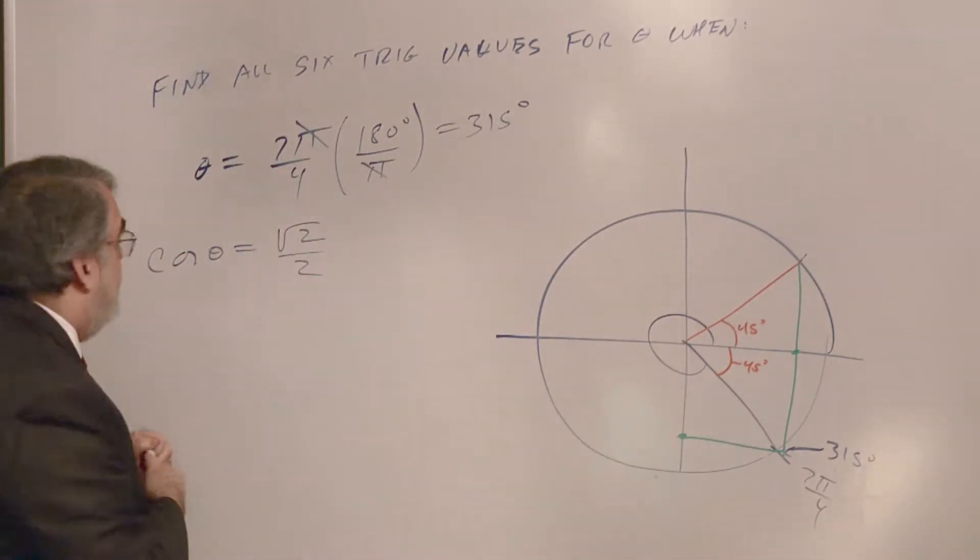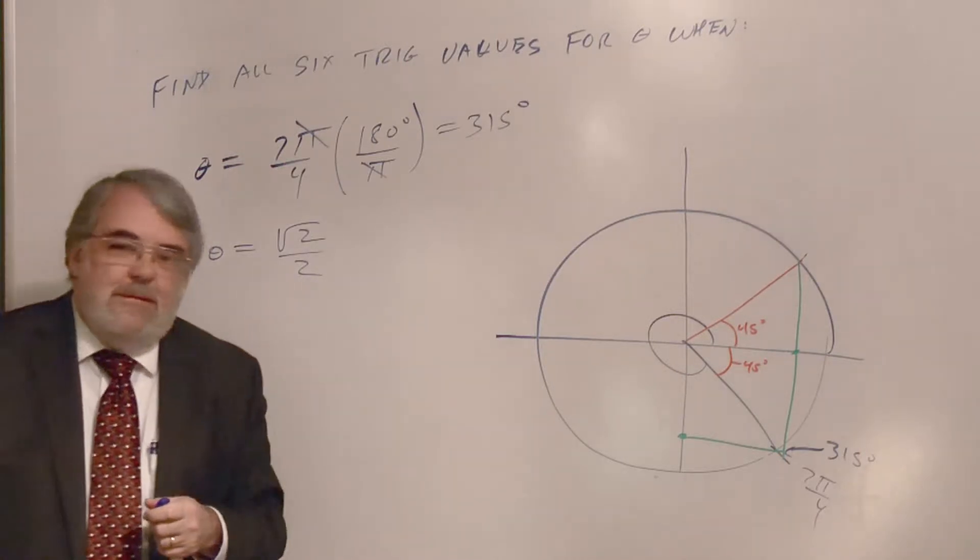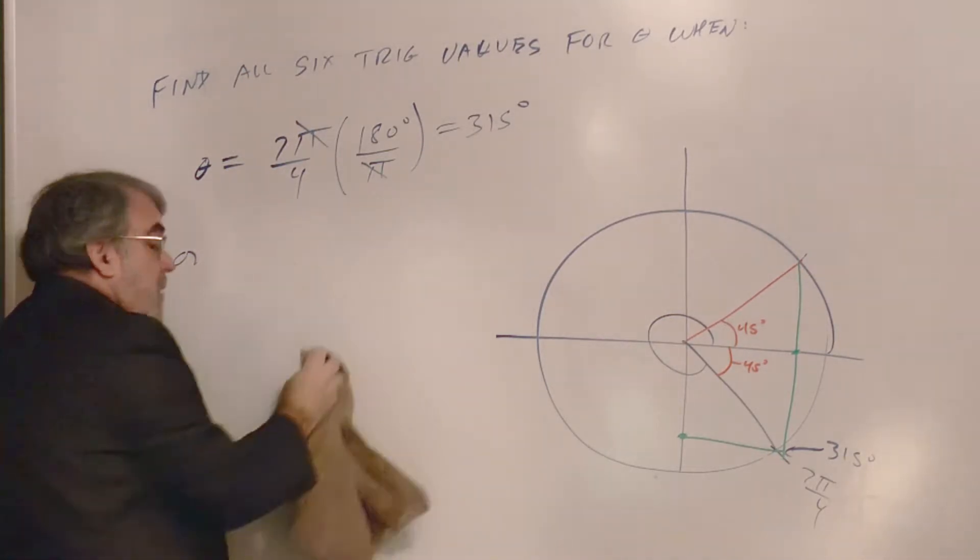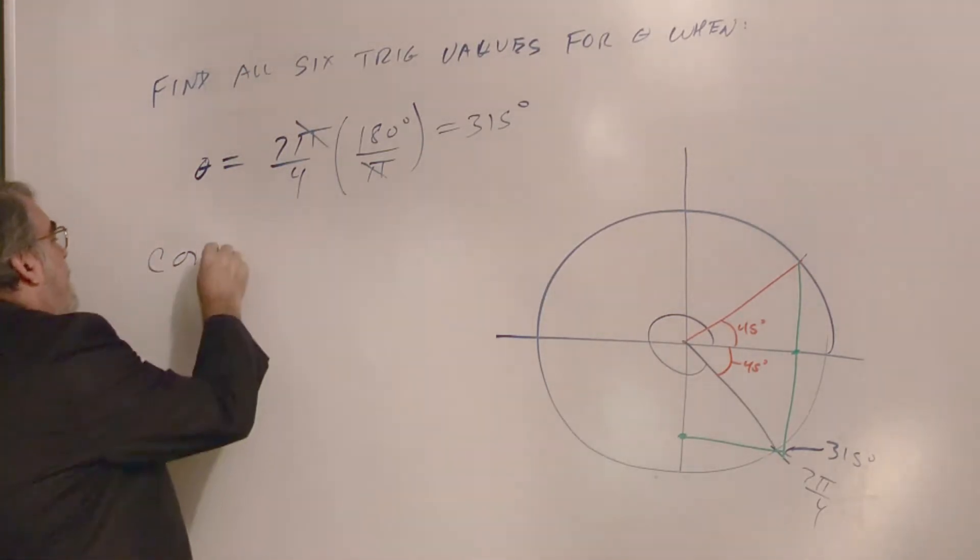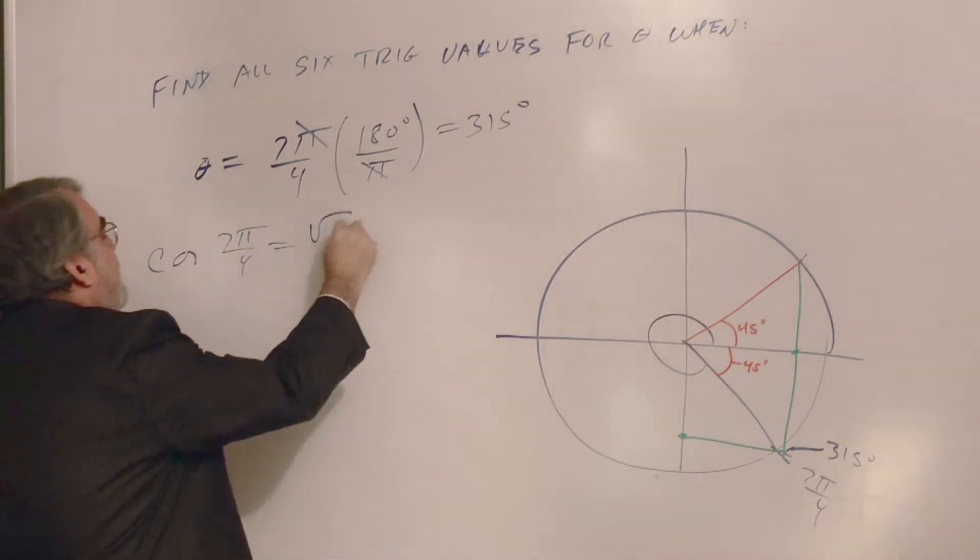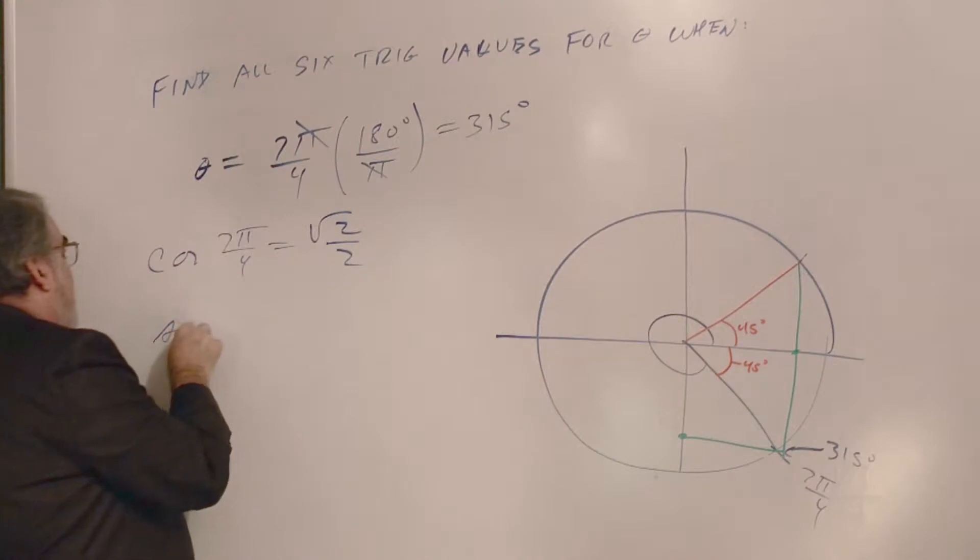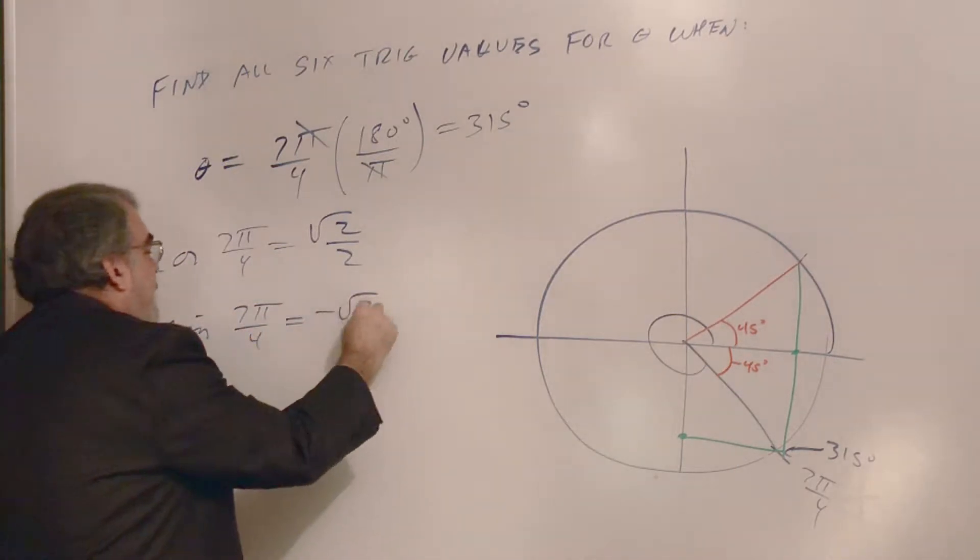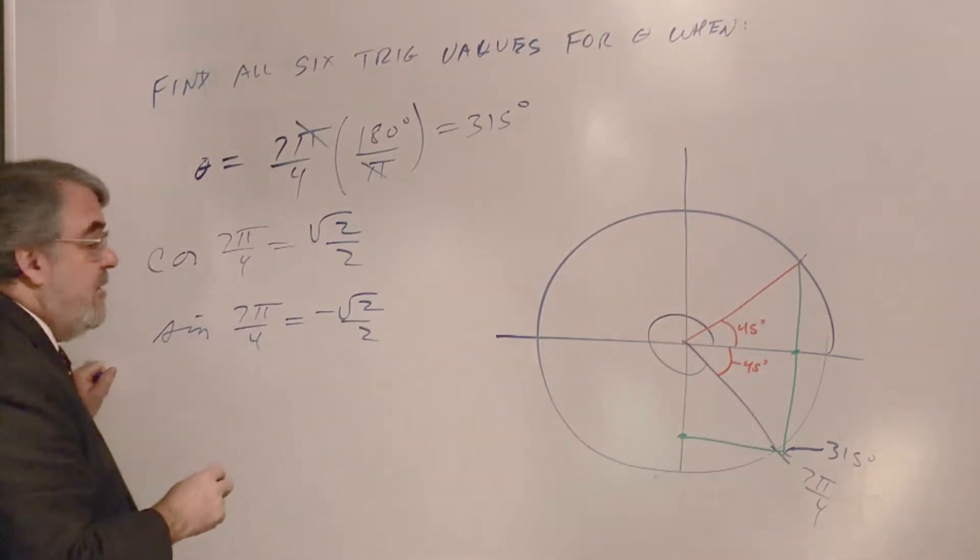Alright, so let me write this as cosine of 7π over 4. Cosine 7π over 4 is square root of 2 over 2. So the sine of 7π over 4 would be minus square root of 2 over 2.